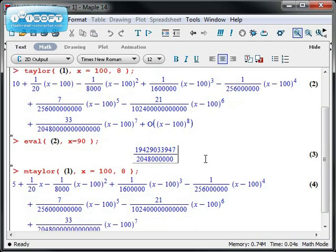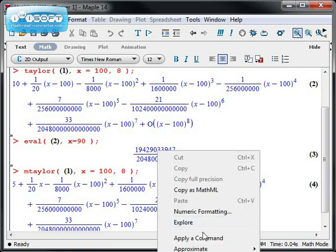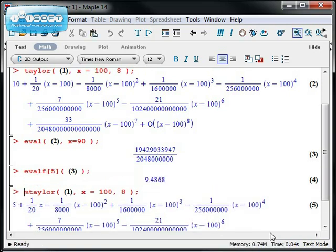I get this ginormous fraction. And again, if I want a decimal approximation of that, I could go down to approximate. And I would come up with, that's about 9.4868.